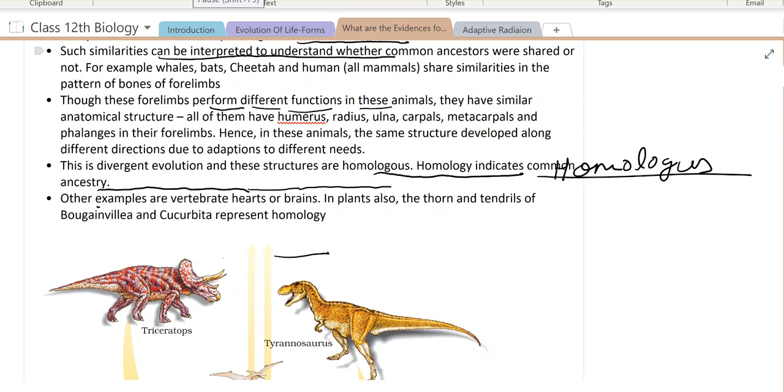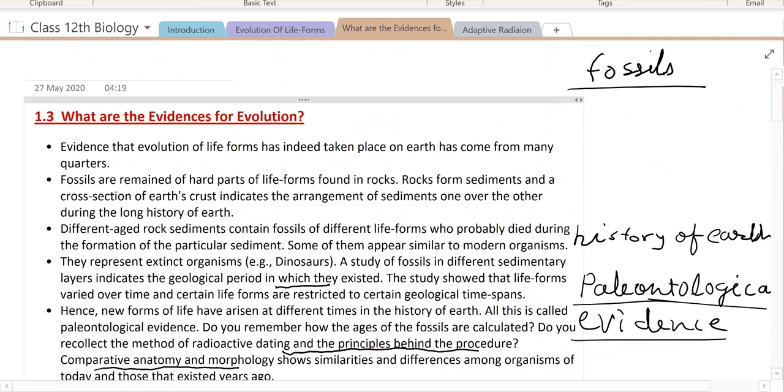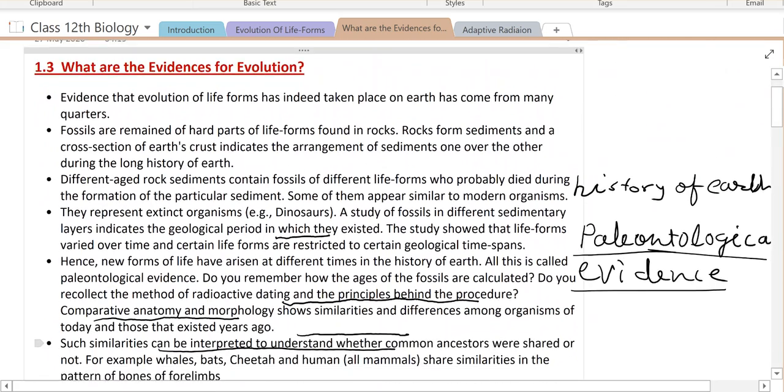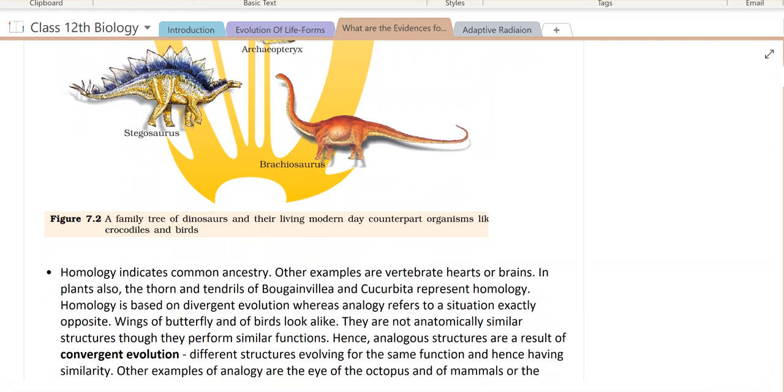Good morning friends. Today's topic is evolution of life forms, what are evidences for evolution, and adaptive radiations. In yesterday's topic we read about chemical evolution, which was proved by S.L. Miller and H.C. Urey experiment.